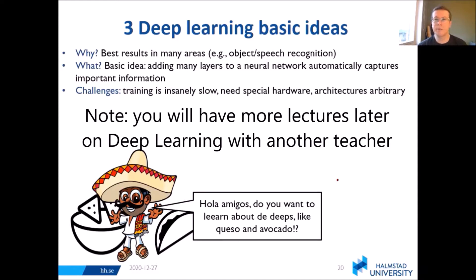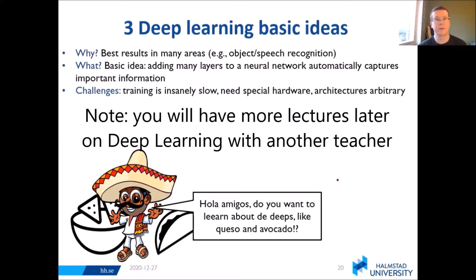Now we go on to deep learning. Why do we care about this? We can get really good results in many areas — state of the art, best results, for example in object and speech recognition. The basic idea is that people found that adding lots of layers to a neural network automatically captures a lot of important information, taking inspiration from how humans also use lots of neurons to learn and make inference.